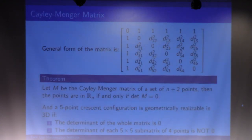Now I'm going to briefly talk about how we use the Cayley-Menger matrix. The general form of the matrix is quite similar to that in 2D, and we use the same theorem mentioned in the paper which states: let M be the Cayley-Menger matrix of a set of n+2 points. Then these points lie in Rⁿ if and only if the determinant of the matrix equals zero.